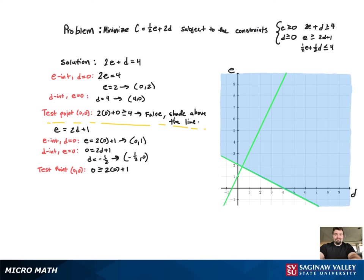And when we plug that in, we get 0 greater than or equal to 1, which is false. 0 is not greater than or equal to 1. So we're going to shade above the line, the region that does not contain 0, 0.